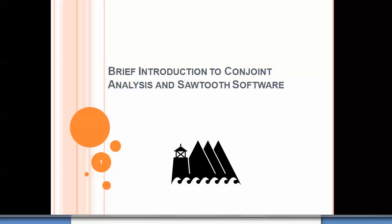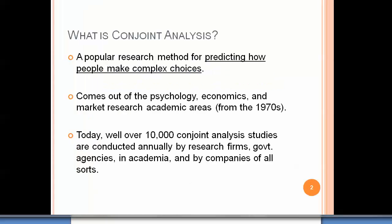Thank you for clicking on this brief introduction to conjoint analysis and Sawtooth Software. Conjoint analysis is a popular research method for predicting how people make complex choices. It comes out of the psychology, economics, and market research academic areas from the 1970s. Today, well over 10,000 conjoint analysis studies are conducted annually by research firms, government agencies, academia, and companies of all sorts.